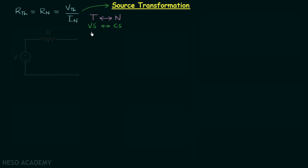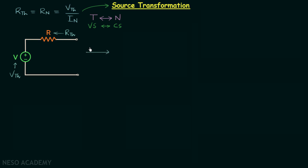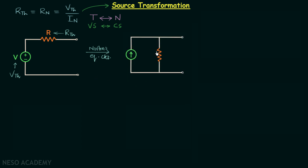Case number one: we have a voltage source V connected in series with a resistance R. Comparing this with Thevenin's equivalent circuit, this is Vth and this resistance is Rth. We will transform it to Norton's equivalent circuit, which has a current source connected in parallel with a resistance. From here, Rn equals Rth, so Rn equals R. For the current source, In equals Vth over Rth, which is V over R.